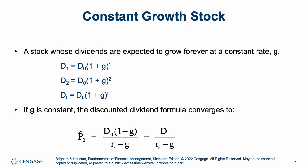If a stock is a constant growth stock, this is a company whose dividends are expected to grow forever at some constant rate G. Dividend one equals dividend zero times one plus the growth rate to the first power; dividend two to the second, dividend T to the T. It grows every year by that constant rate. If G is constant, the discounted dividend formula is: Price zero equals next year's dividend divided by return on the stock minus the growth rate. This allows you to get a value for what the stock should be trading at right now based on its dividends.